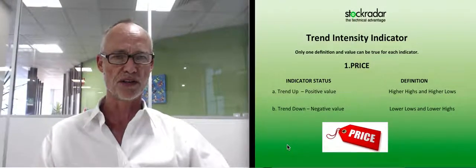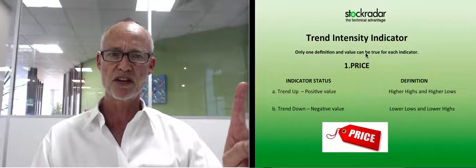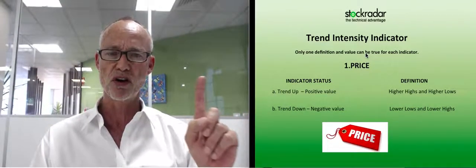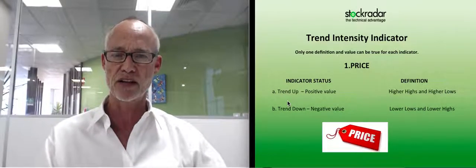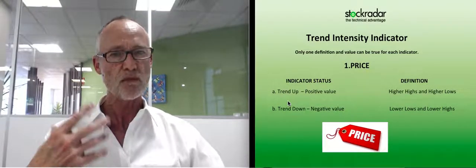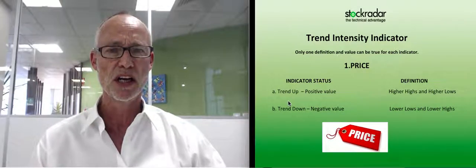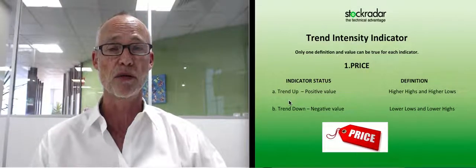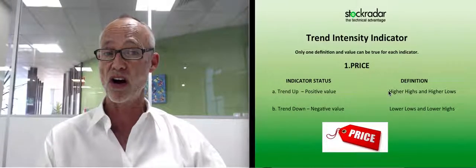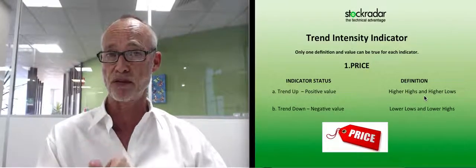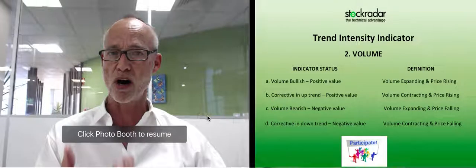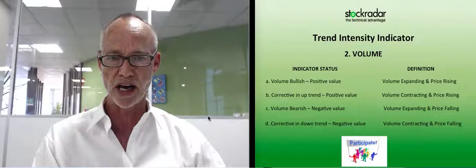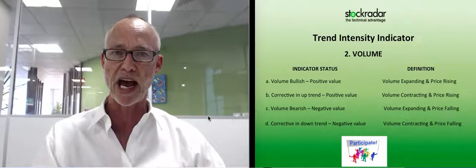If we look at the first one — price — there's only one definition and one value can be true for each indicator. For price, the trend is either up or down, and although that's fairly simple, price is the most powerful and most important part of the indicator, so it actually gets the heaviest weighting. If it's in higher highs and higher lows, it gets a positive value. If it's lower lows and lower highs, it gets a negative value. Remember, I'm only going long — I'm more interested in the ups rather than the downs, because when the downs are happening, I'm simply out of the market.